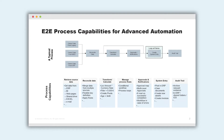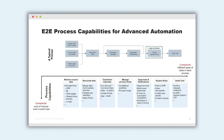From an automation implementation perspective, there are two dimensions of complexity. The first is automating each individual task so the machine does it and the person is no longer required. The second complexity is combining these automated tasks in a way that creates a truly end-to-end automated process, without requiring various separate tools that cover these things in different ways.